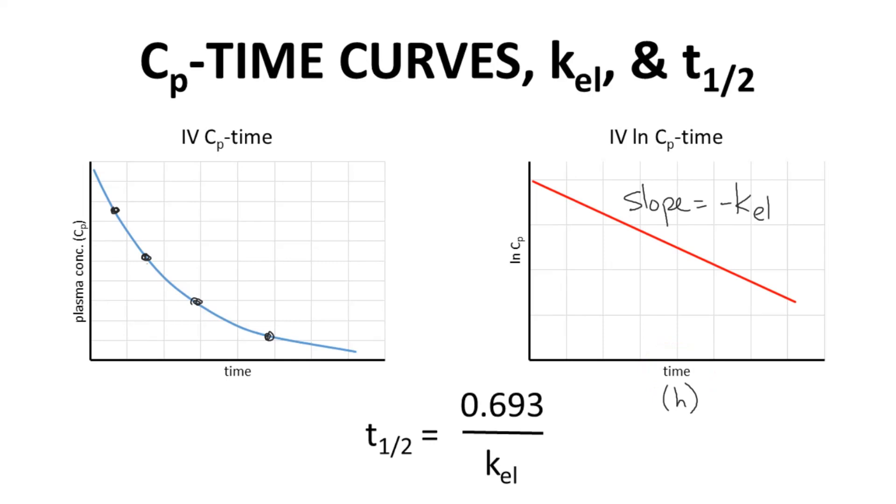From KEL we can quickly calculate half-life. Half-life is 0.693 divided by KEL. If KEL has units of hours, then half-life will have units of hours, which is typical. The half-life describes the time interval required for the plasma concentration of a drug to drop by a factor of 2. Half-life is a key PK parameter.